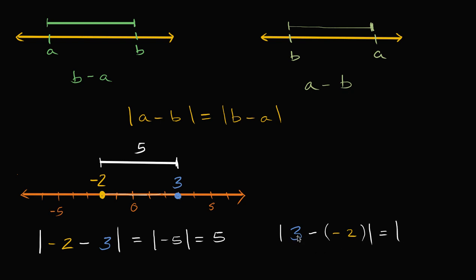This is going to be three minus negative two. That's the same thing as three plus positive two, or five. So this is going to be the absolute value of five, which of course is equal to five.